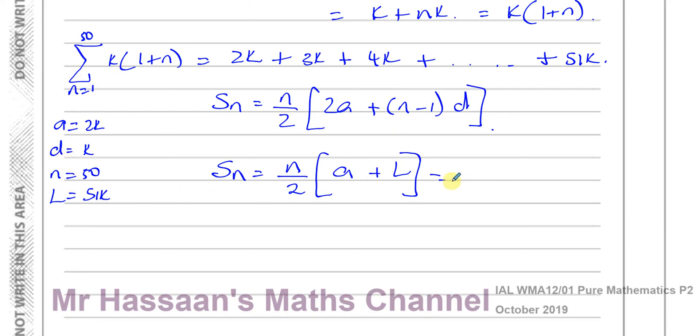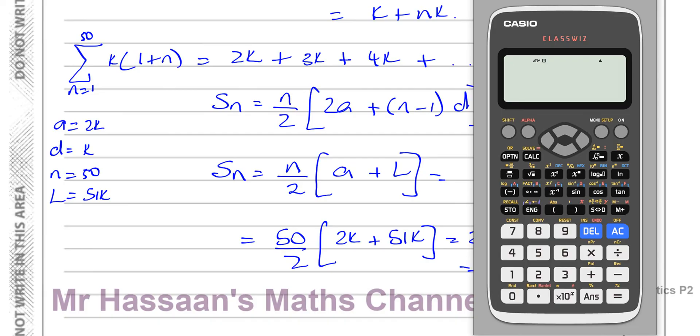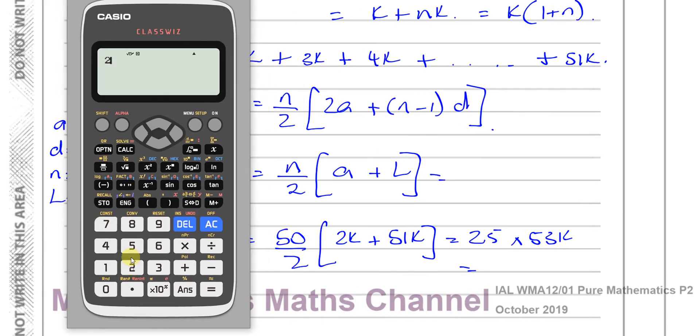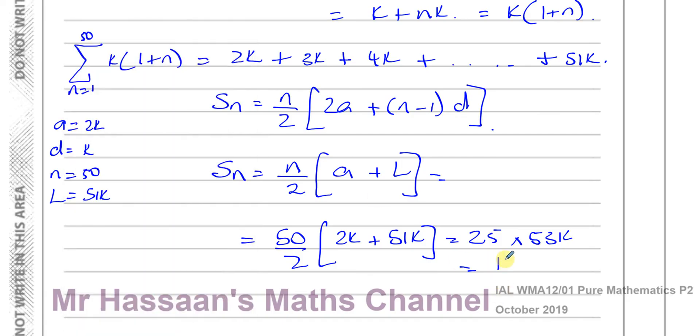So now we've got N over 2, so we've got 50 over 2, which is 25, and you've got 2K plus 51K, so you're going to have 25 times 53K, and that will give you your answer. 25 times 53 gives you 1,325, so it's 1,325K.